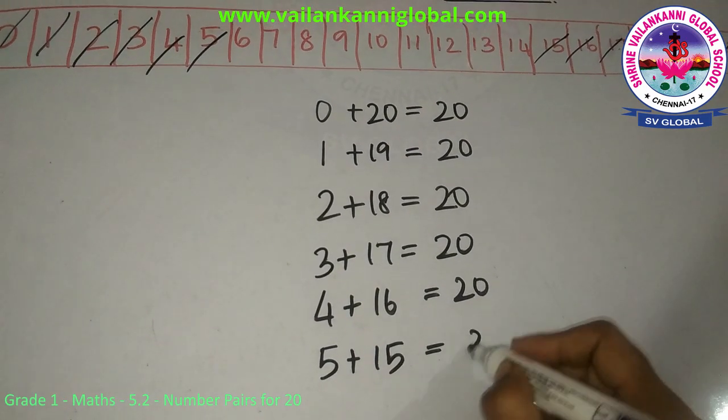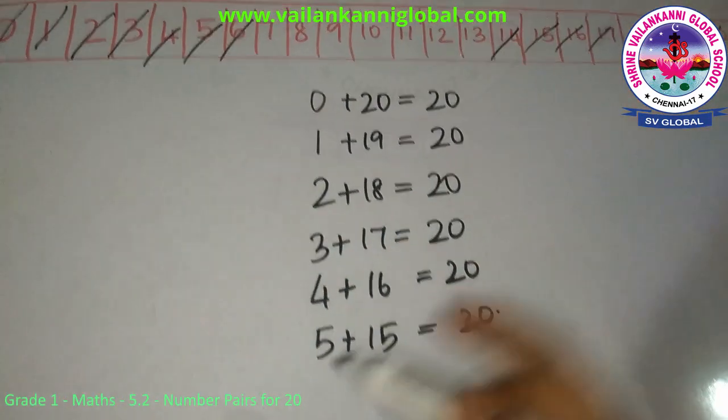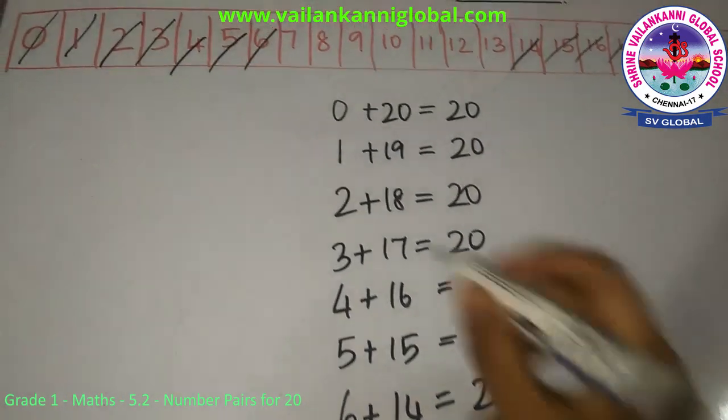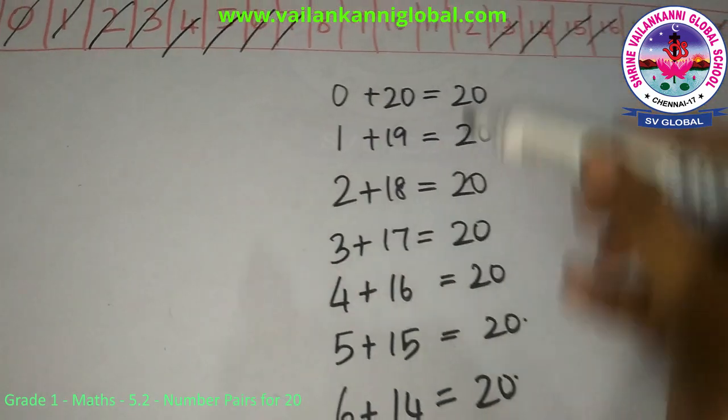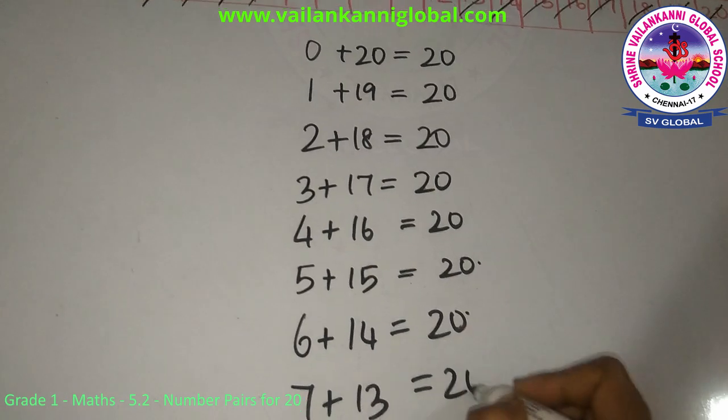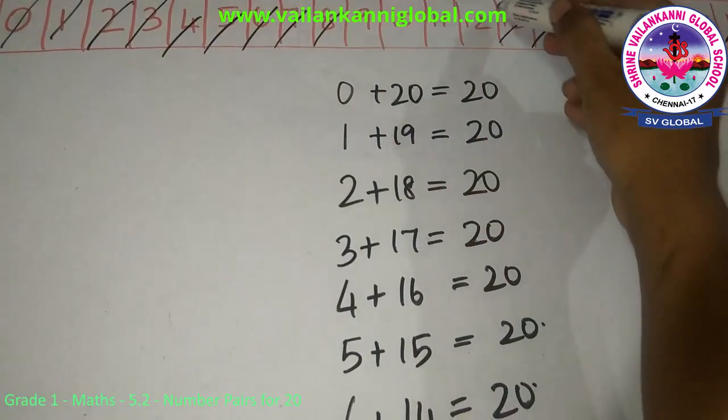6 plus 14 gives me 20, 7 plus 13 gives me 20, then 8 plus 12.